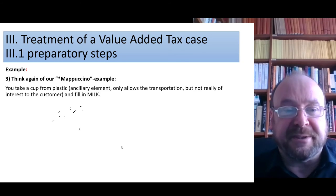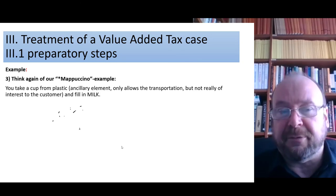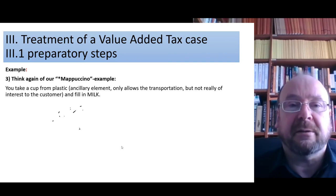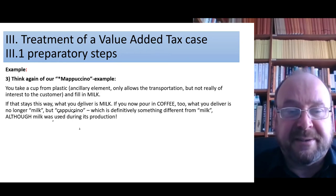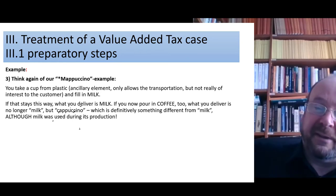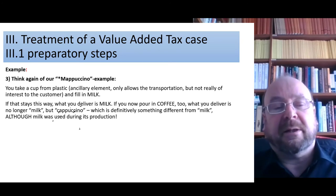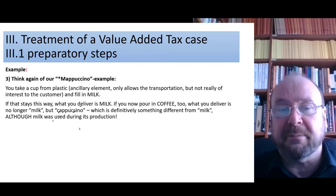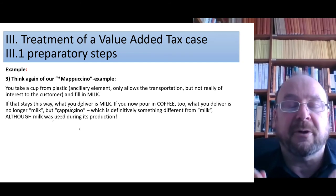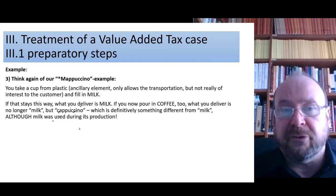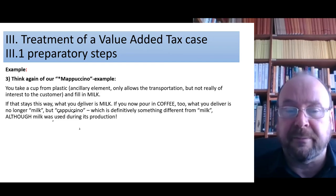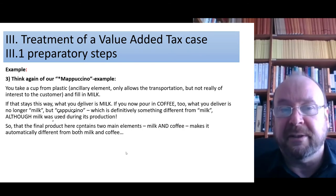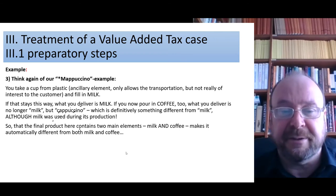Think again of the cappuccino example. You take a plastic cup — ancillary element — and fill in milk. If that stays as is, what you deliver is milk. Now you pour in the coffee, and what you deliver is neither milk nor coffee powder but it has become cappuccino, which is definitively no longer milk — although milk was used during its production. So there is a difference, and the rules for milk can no longer apply for the delivery of a cappuccino. The two main elements mixed automatically make the final thing different from the original raw materials.